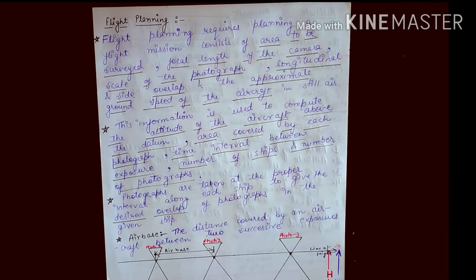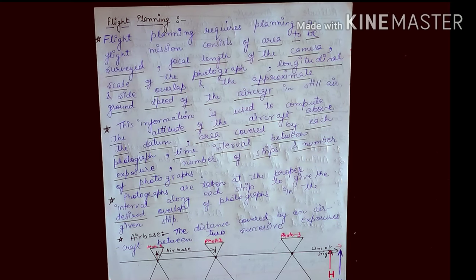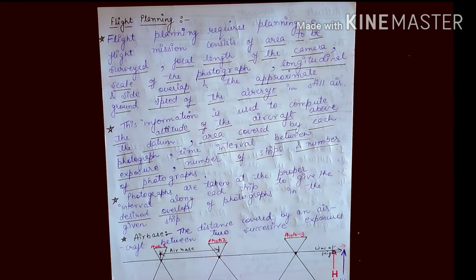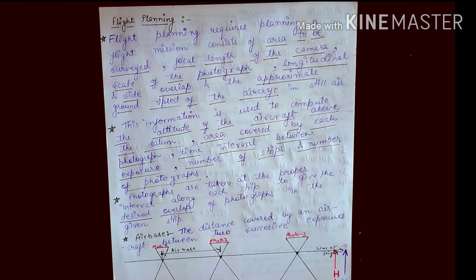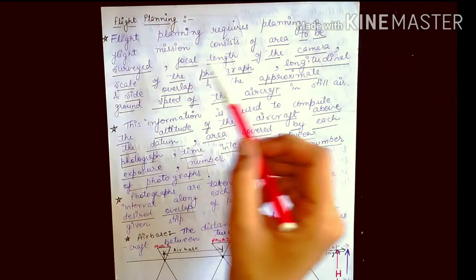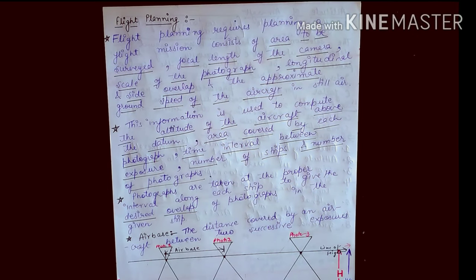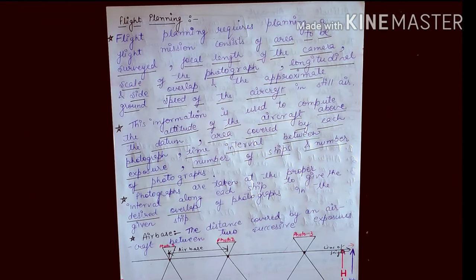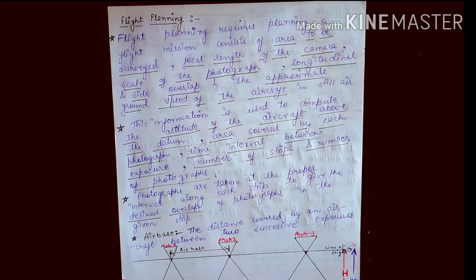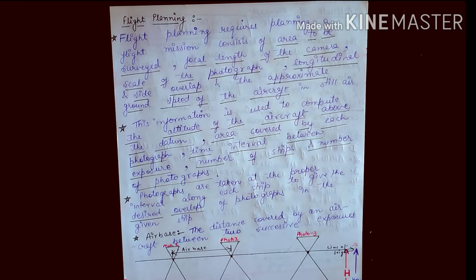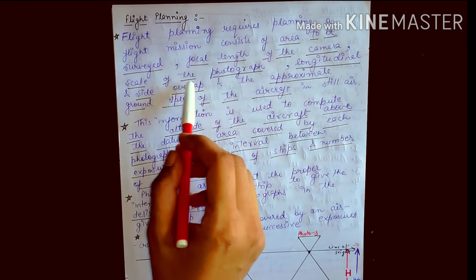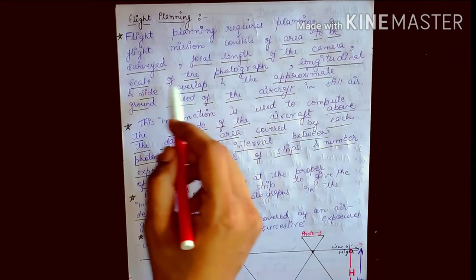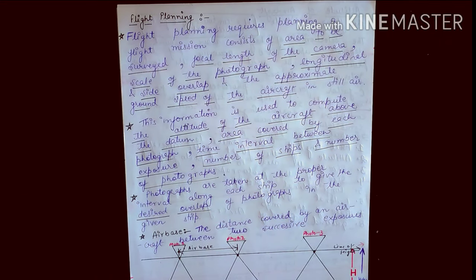Today we will be studying flight planning. Flight planning means planning a flight mission that consists of the area to be surveyed, focal length of the camera, exposure station (camera axis to photo plane — both positive and negative photo plane), and the scale of the photograph, which is photo distance divided by ground distance.